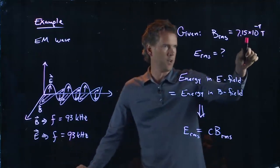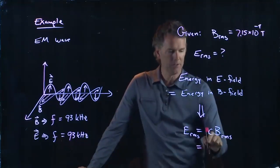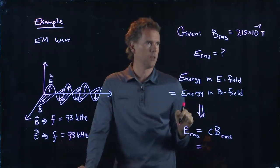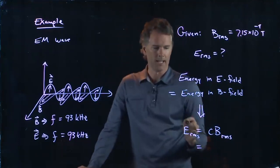So if I take this value of B and I multiply it by C, 3 times 10 to the eighth meters per second, we're going to get the right answer.